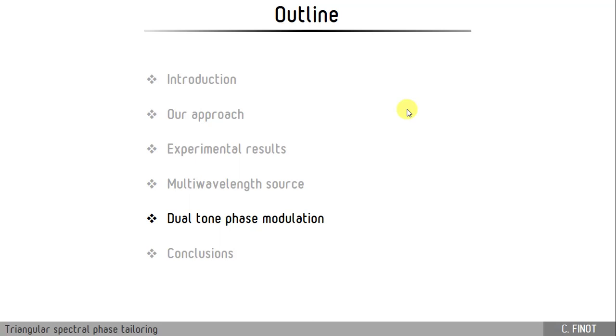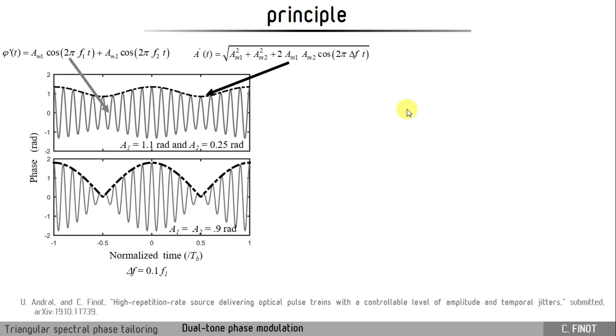The last thing that I would like to present is the use of a dual-tone phase modulation. In this case, what we have used is instead of using a single phase modulation, we have used two phase modulations with frequencies that are slightly different and with amplitudes that can also be different. When you add two sinusoidal modulations, what you create is a beating if the two modulations do not have perfectly the same frequency. So we observe a beating. If the level of the two modulations is different, the envelope of this beating does not go down to zero.